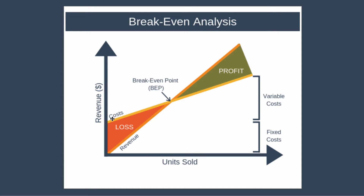Next we have the costs line, which shows how the costs incurred by the business change as a growing number of units is sold. When you sell a low number of units, your costs are higher than your revenue and that means you're making a loss — that's this area shaded in red in the diagram.